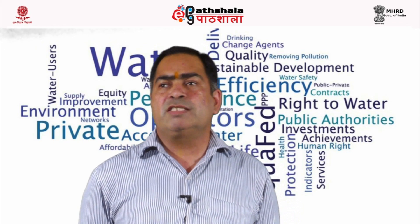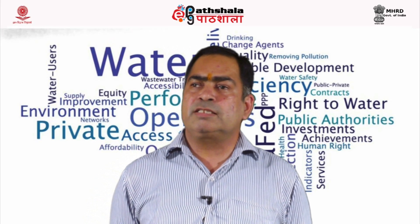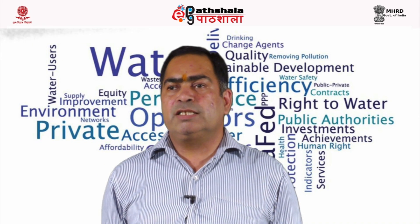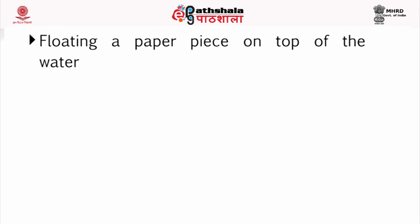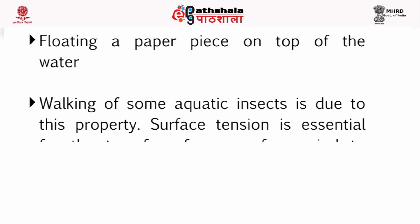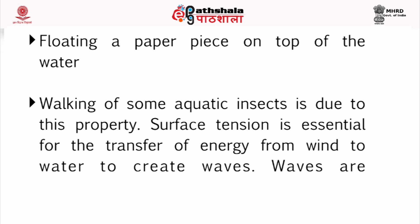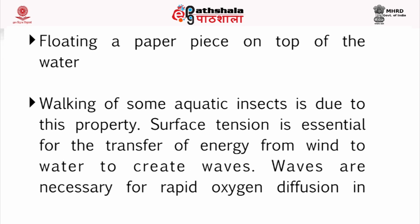The formula is gamma equals F divided by L. Water surface tension can hold weight that would normally sink. Floating a paper piece on top of the water is also due to the property of surface tension. Walking of some aquatic insects is due to this property. Surface tension is essential for the transfer of energy from wind to water to create waves, which are necessary for rapid oxygen diffusion in lakes and seas.